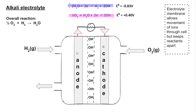Again, the only product is water. The E-cell, or voltage of the cell, is most positive minus least positive: 0.4 minus minus 0.83, giving the same voltage as before — 1.23 volts.